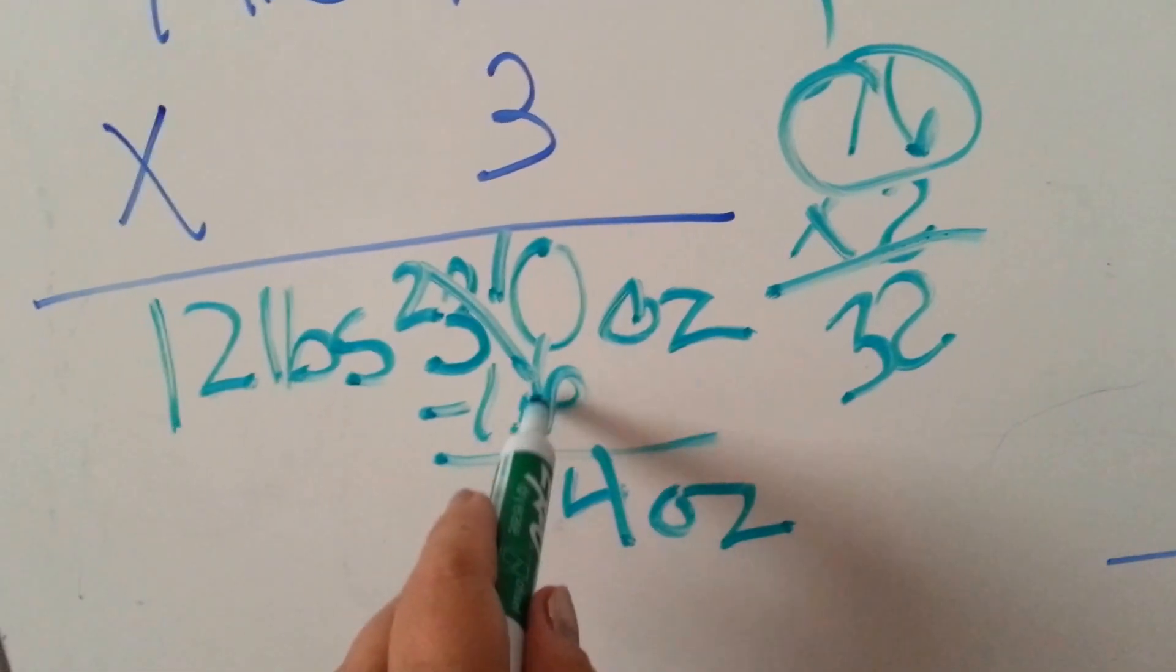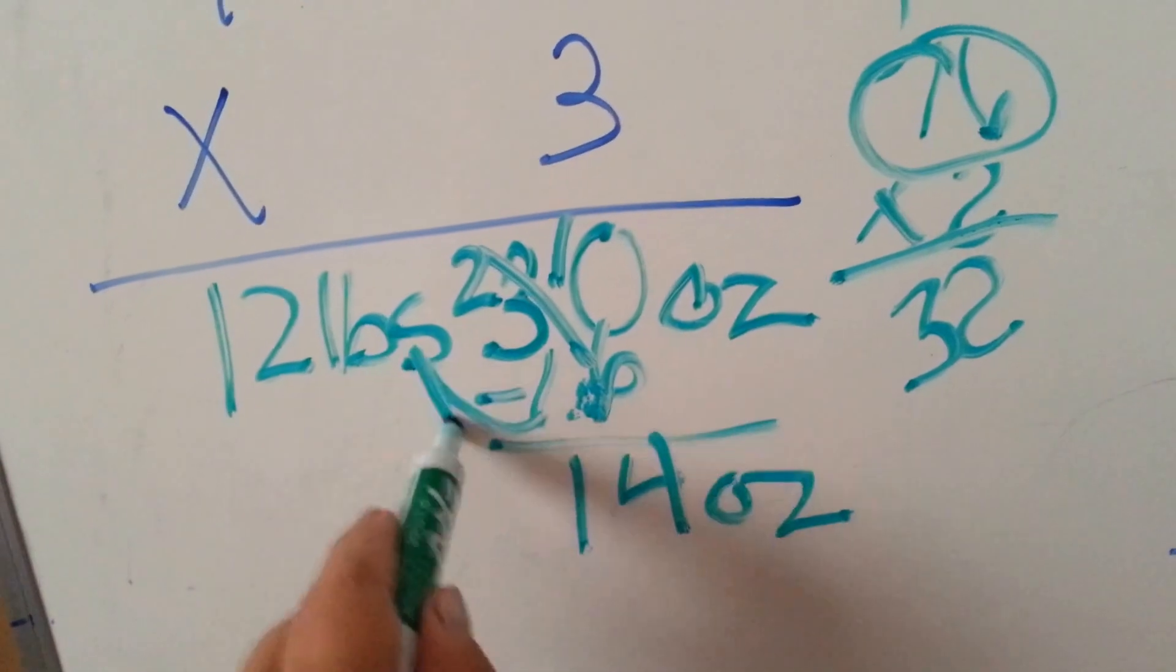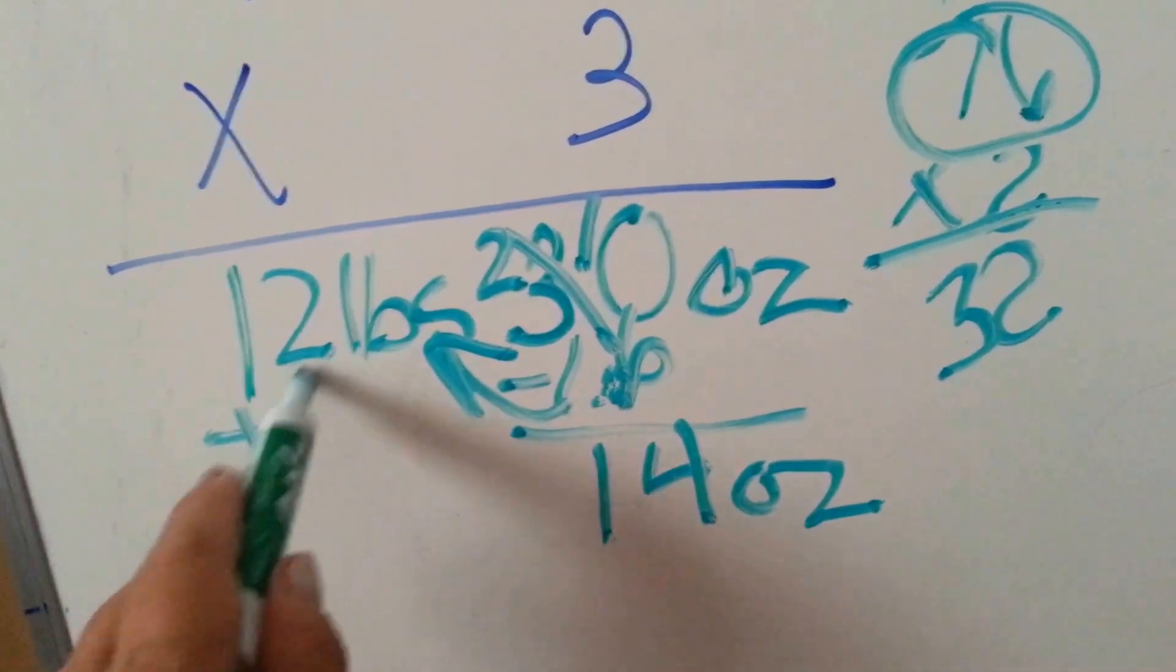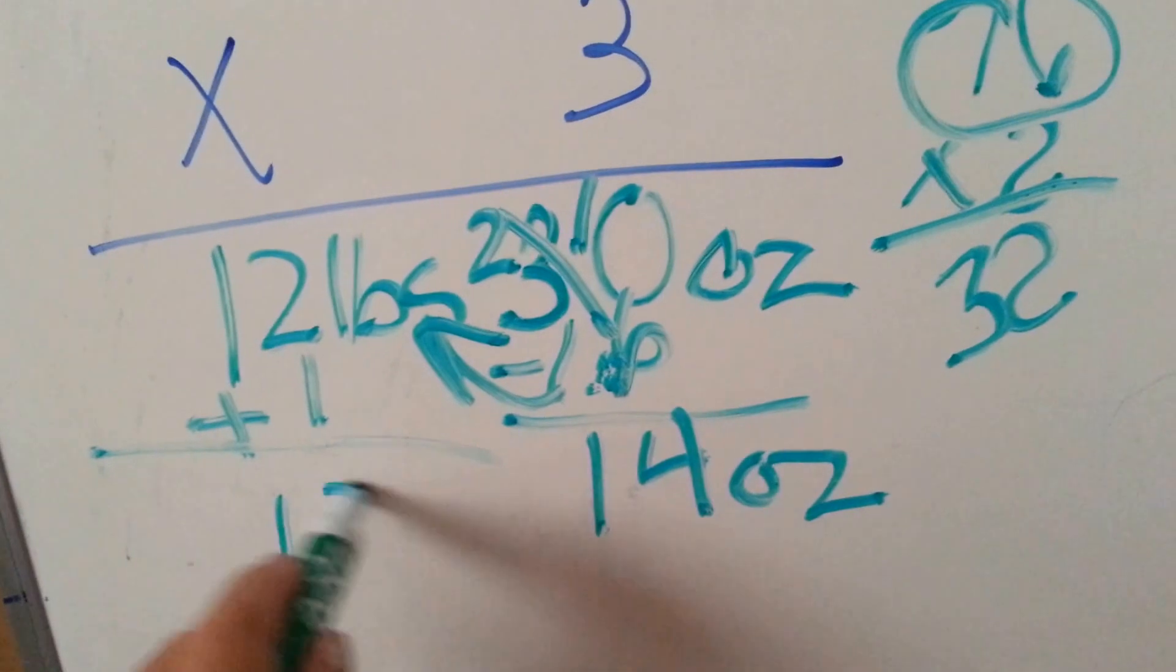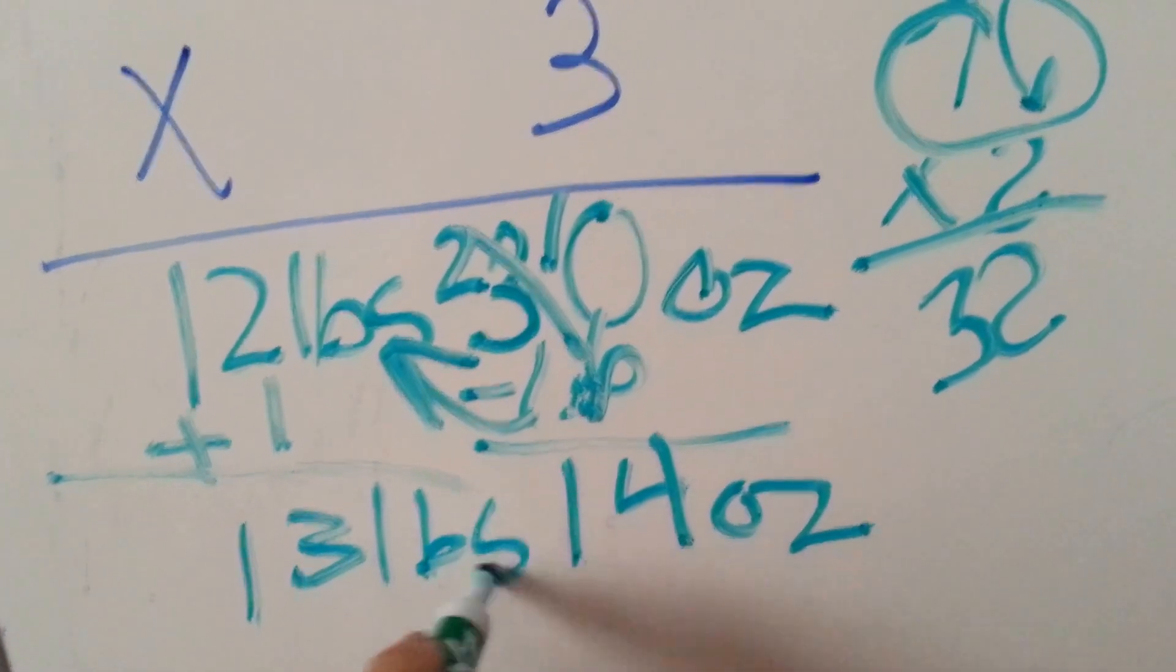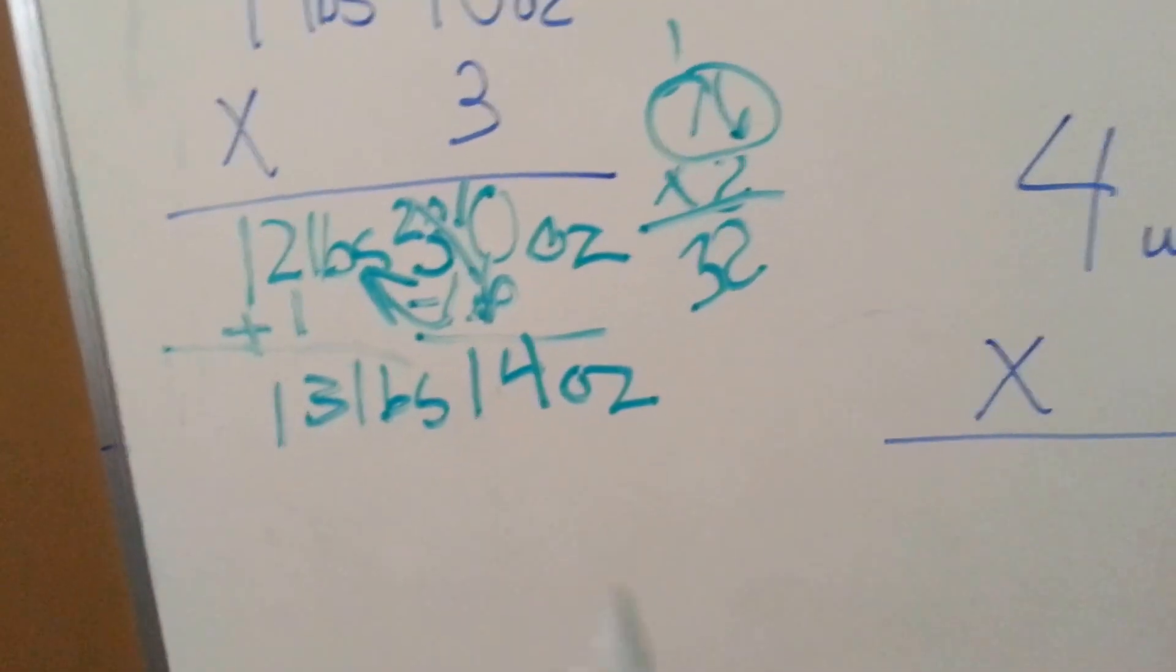And now that 16 ounces, that 1 pound, has to be added to this. So 12 pounds plus 1 pound is 13 pounds. So our answer is 13 pounds, 14 ounces.